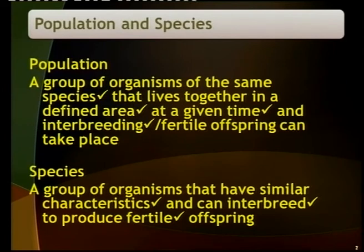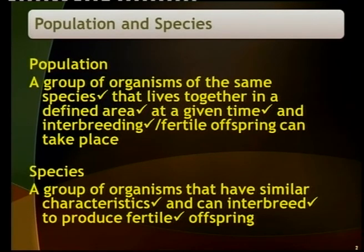So a species is a group of organisms with similar characteristics, and they must be able to interbreed and produce fertile offspring.